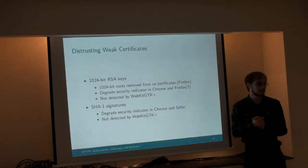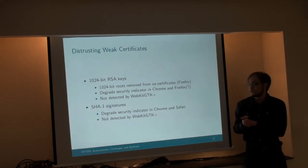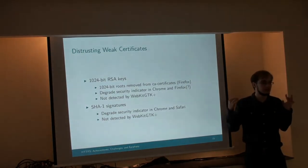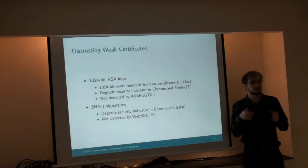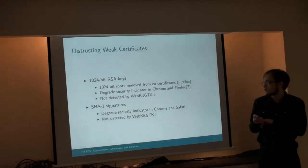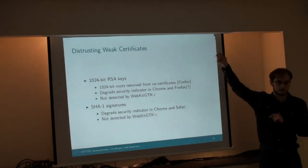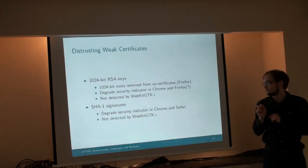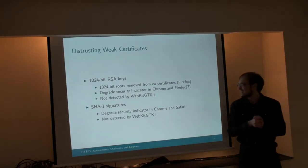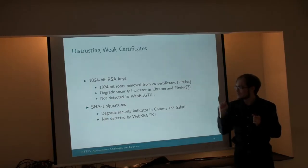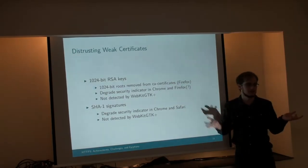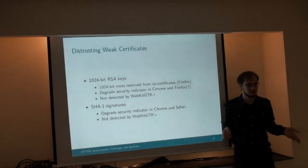Distrusting weak certificates. Two types of certificates we don't want to trust anymore. Certificates signed by 1024-bit RSA keys are generally considered breakable — you can attack a 1024-bit RSA public key with a supercomputer for a year and get the private key. So that's no longer considered secure. Chrome will display the connection with a yellow 'your security is not secure' icon instead of a secure lock. Firefox might be completely blocking them or degrading the security indicator. WebKitGTK doesn't detect this at all — it's a disservice to our users and we need to upgrade the security indicator.